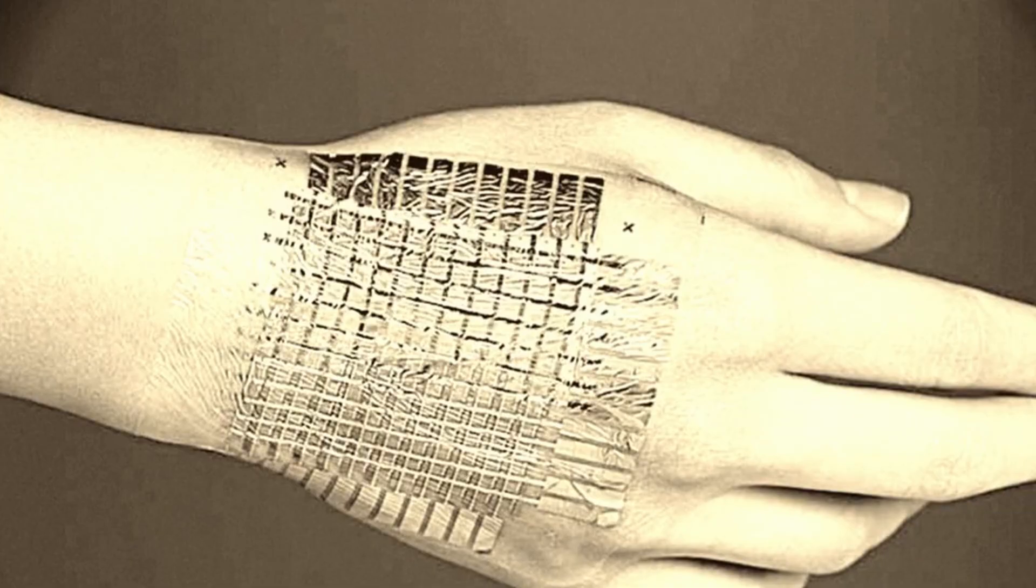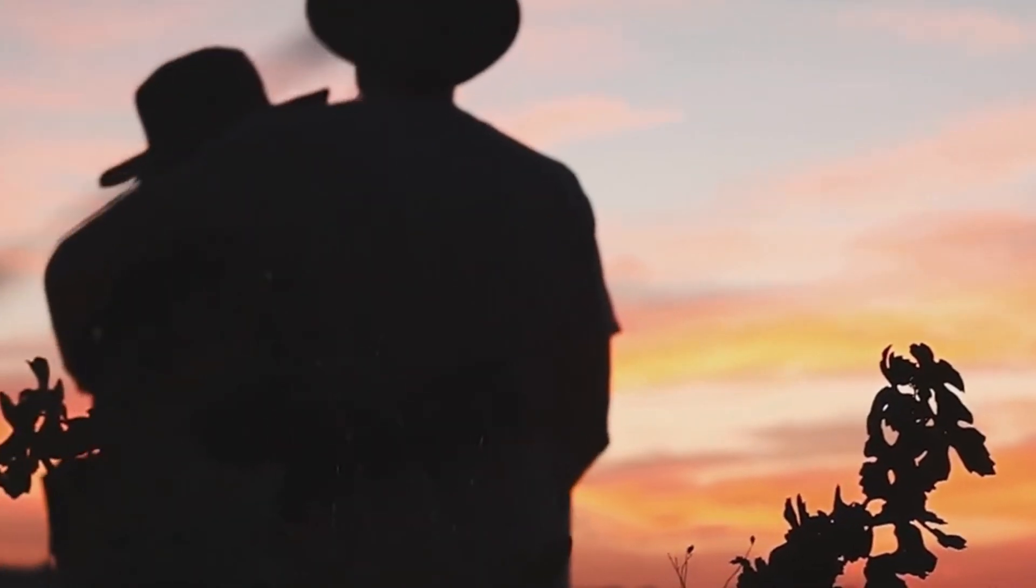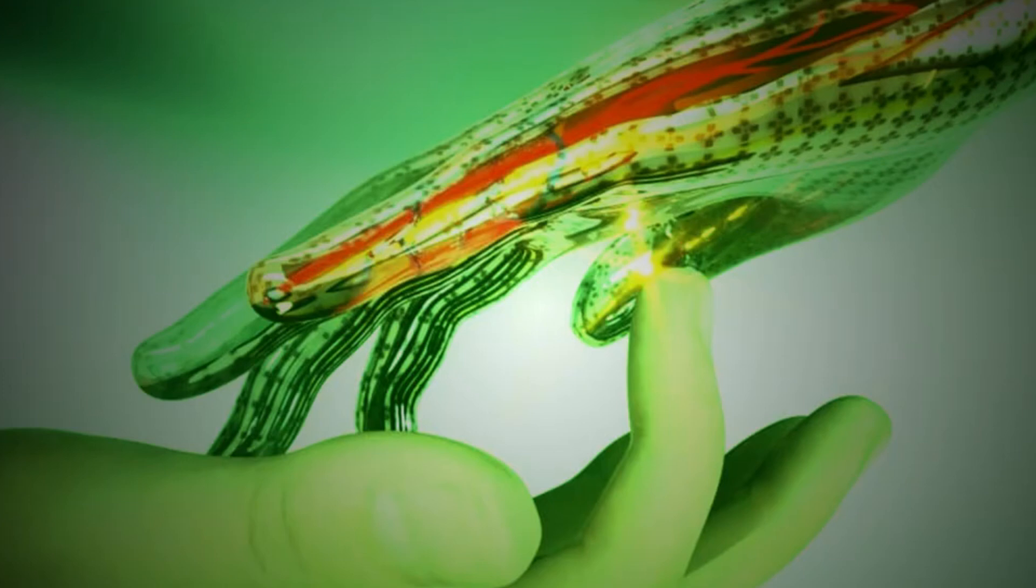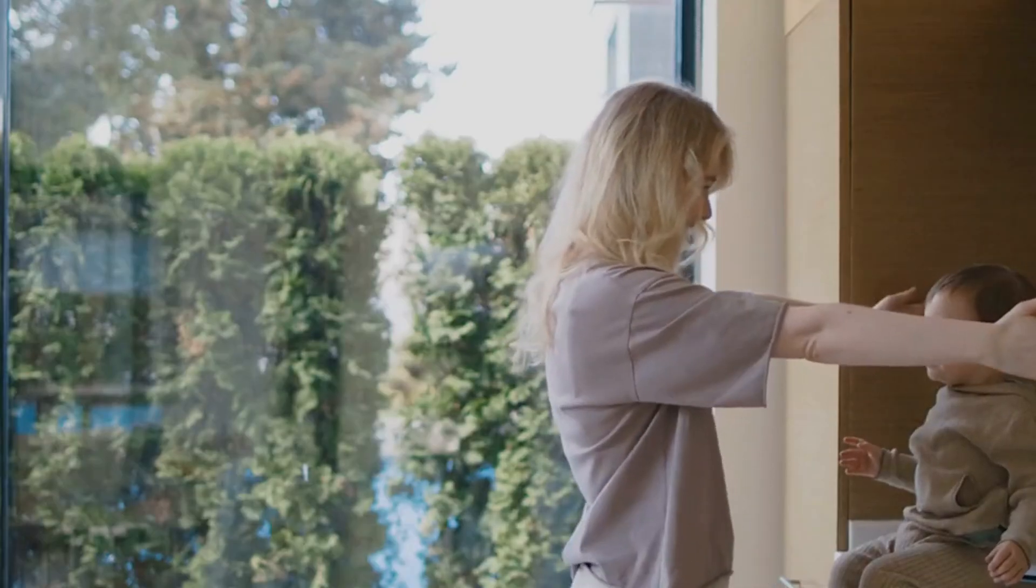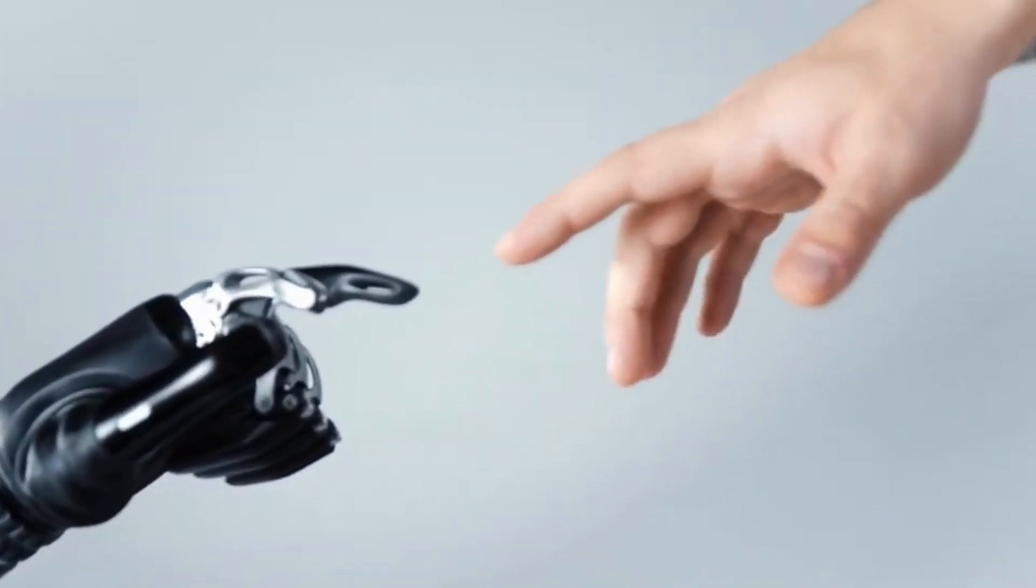These signals can then be sent to another eSkin system via Bluetooth, where the actuators convert them into mechanical vibrations that mimic the initial movements. Imagine feeling a hug from a friend across the miles. Now, a wireless soft eSkin developed by engineers at the City University of Hong Kong could one day make giving and receiving hugs over the internet a reality.